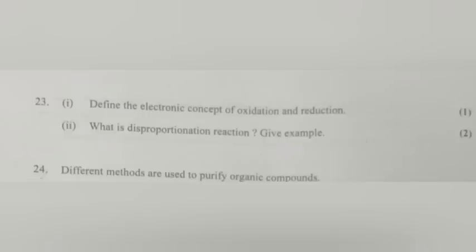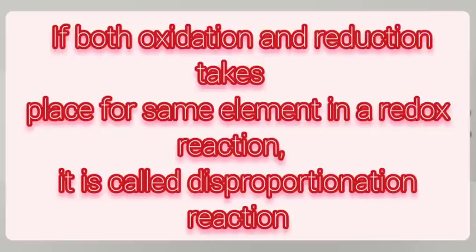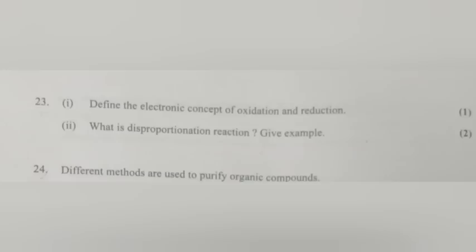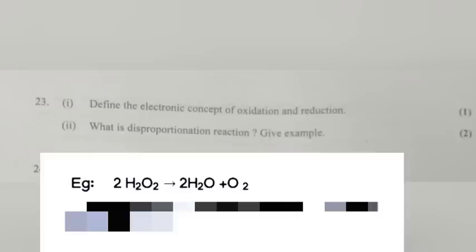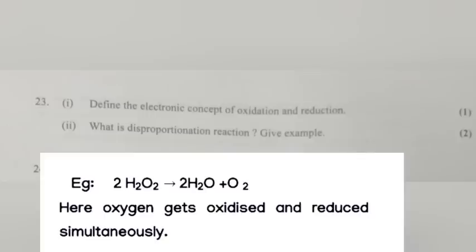Question 23.2: What is a disproportionation reaction? Give an example. Answer: If both oxidation and reduction take place for the same element in a redox reaction, it is called a disproportionation reaction. Example: 2H2O2 → 2H2O + O2. Here, oxygen gets oxidized and reduced simultaneously.